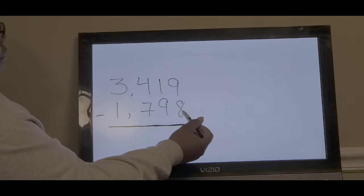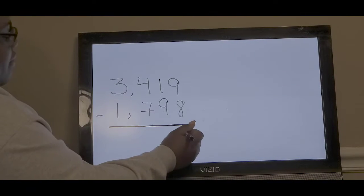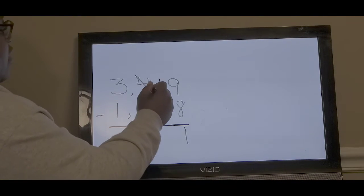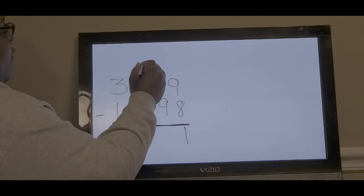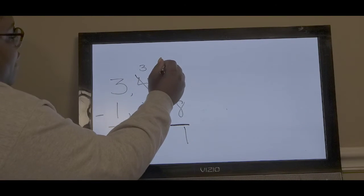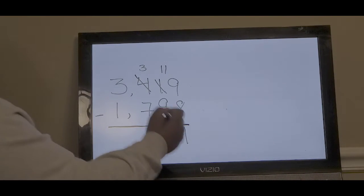Can we take away 8 from 9? Yes, we can, and that leaves us with 1 left. Can we take away 9 from 1? No, I don't think so. We're going to have to borrow from our hundreds place. We're going to borrow 10, and that will give us 3. Then we're going to add that 10 to our tens place, and that will give us 11. 11 minus 9 is 2.